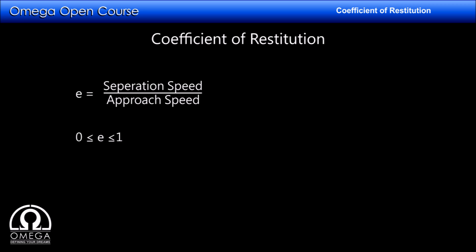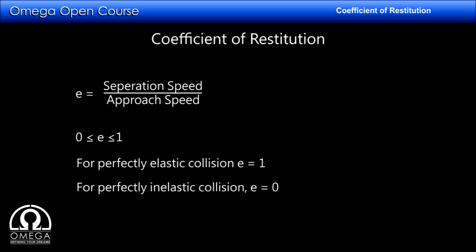The value of the coefficient of restitution is usually between 0 and 1. In the case of a perfectly elastic collision, the value is 1, while in the case of a perfectly inelastic collision it is 0. In all other cases it lies somewhere between 0 and 1.